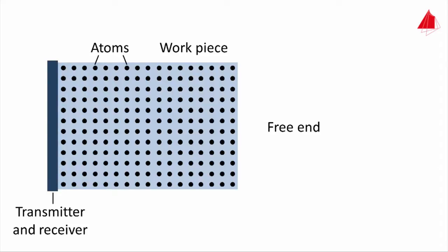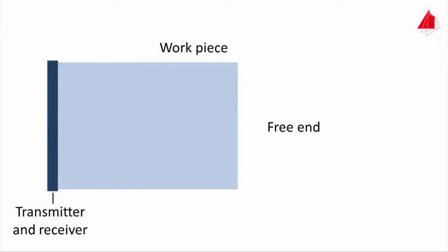So if a sound wave is generated at one end of a workpiece, it will travel through the material with its speed of sound. At the free end of the workpiece, the sound wave is reflected and returns to the transmitter, which then acts as a receiver.